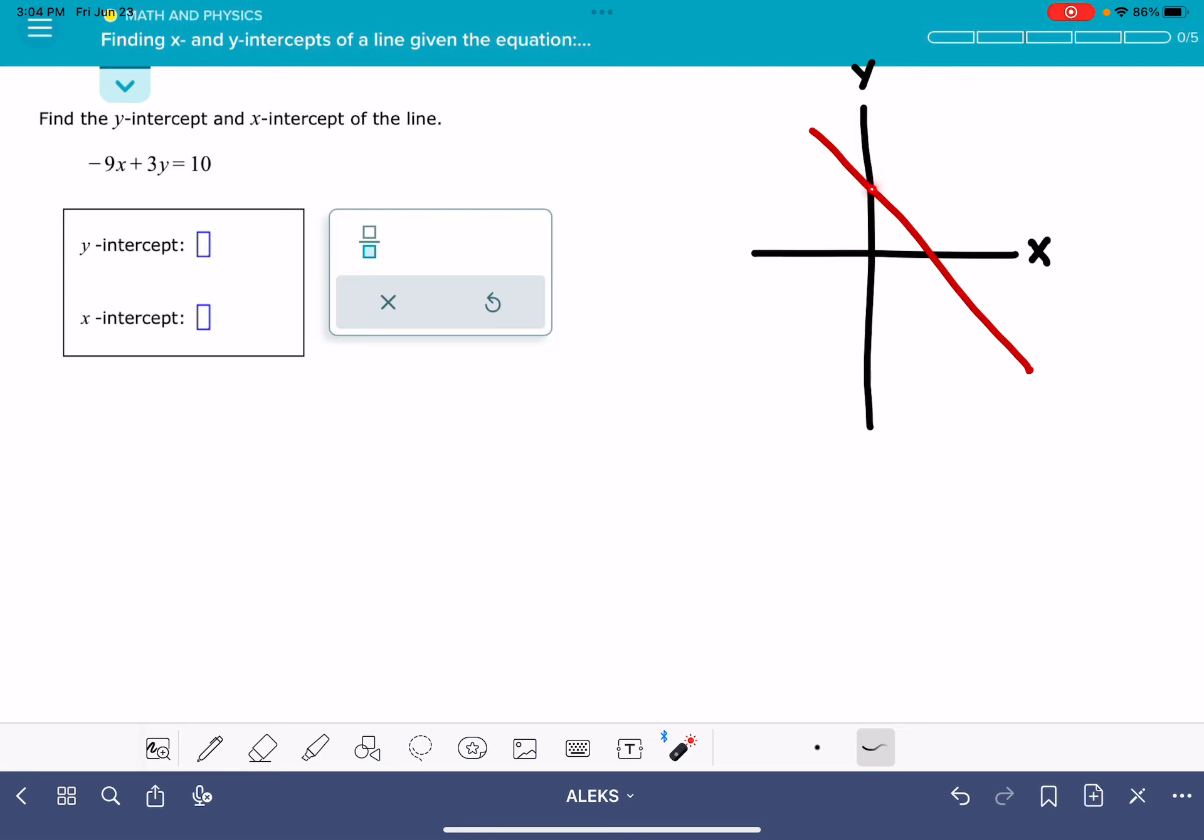But what we do know is that where our line crosses the y-axis at this point right here, the value of x equals zero. So at the y-intercept, x is equal to zero.